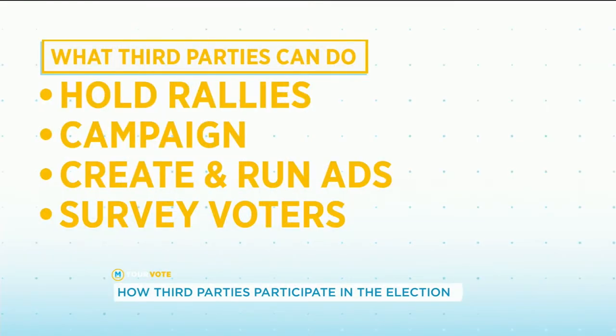Third parties have the right to expression, just like all Canadians. Typically what these third parties are doing in trying to influence how Canadians are voting is engaging in paid advertising. You might start to see ads on TV, on the radio, on the internet from groups trying to convince Canadians how to vote. They can also engage in other partisan advocacy during an election campaign, including organizing political rallies, conducting election surveys, and get-out-the-vote efforts.